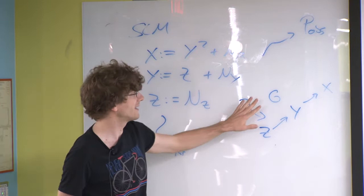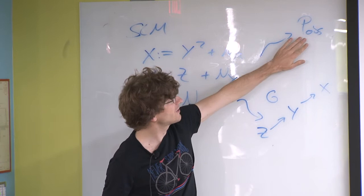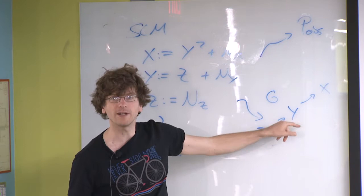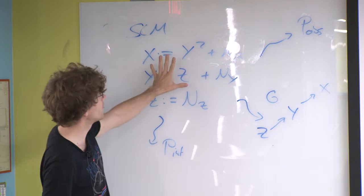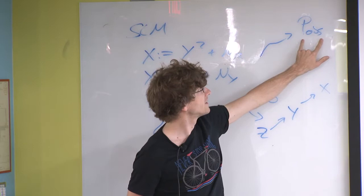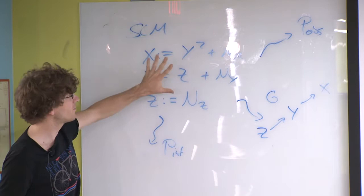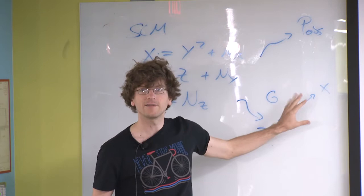The idea was to focus on the graph: given the observational distribution, we are trying to recover the graph structure. Whereas today, we will see methods that focus a bit more on the structural causal model itself. So again, we are given data — in an infinite setting, you can think of receiving the observational distribution — but we will focus on trying to recover the structural causal model rather than just the graph structure.